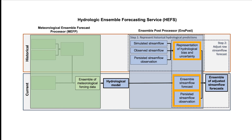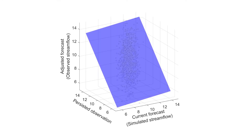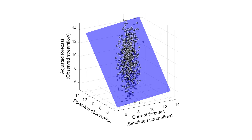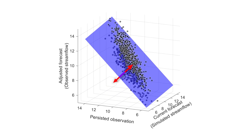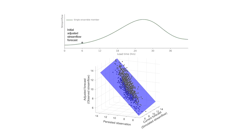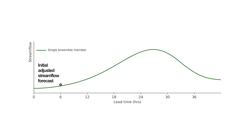For the final operation to adjust the forecast at this time step, ONSPOST returns to the scatter of points around the plane to account for hydrological uncertainty. This scatter represents the historical uncertainty from the hydrological model. ONSPOST samples this uncertainty and combines it with the adjusted forecast to make a final adjustment to the forecast value. For example, if we adjust our previous forecast of 11 CFS for uncertainty based on the cloud, we get a final adjusted streamflow forecast at 6 hours of 12 CFS.